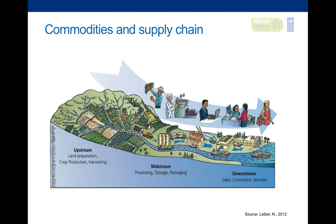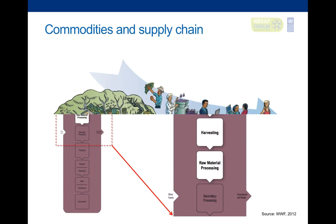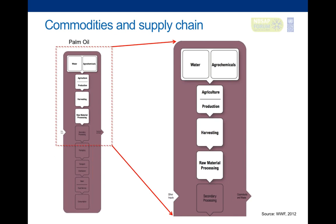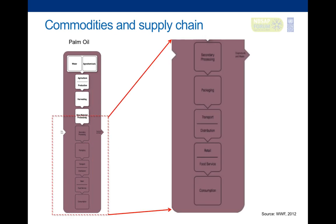There's a secondary process until it continues to consumption. Going back to the previous slide, we can see that the impact on biodiversity or on the ecosystems is higher in the upstream part where commodities are being produced and harvested.